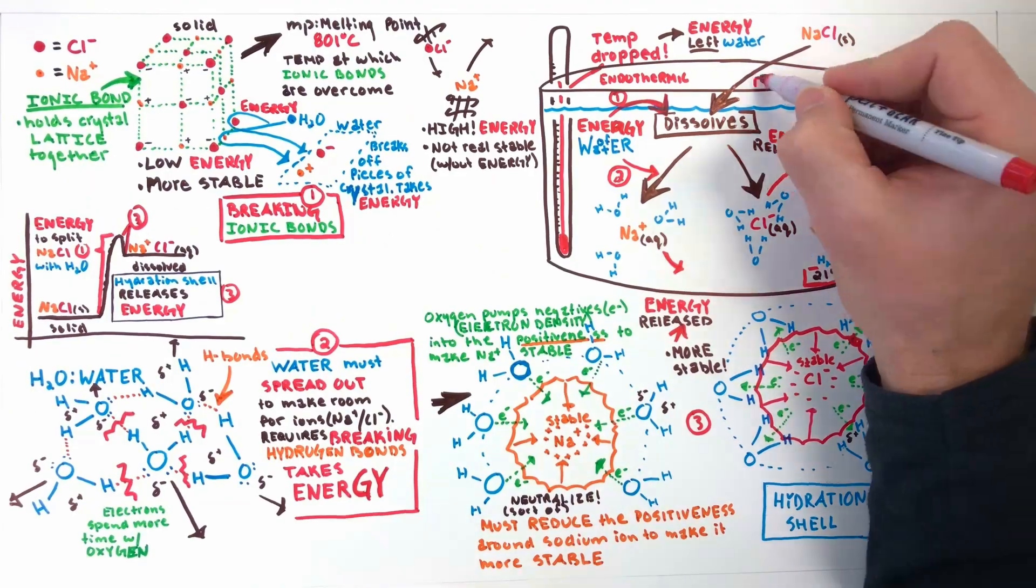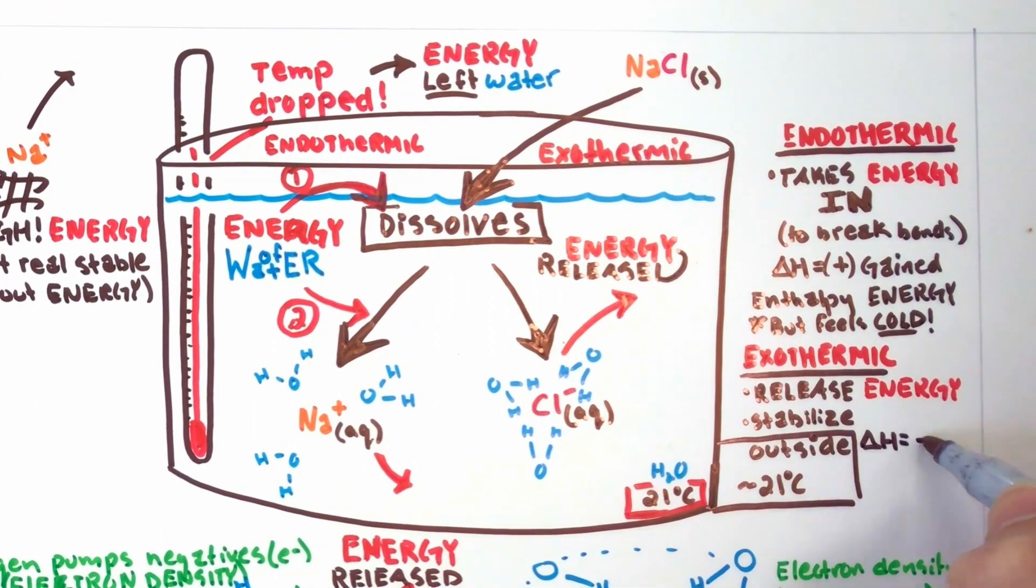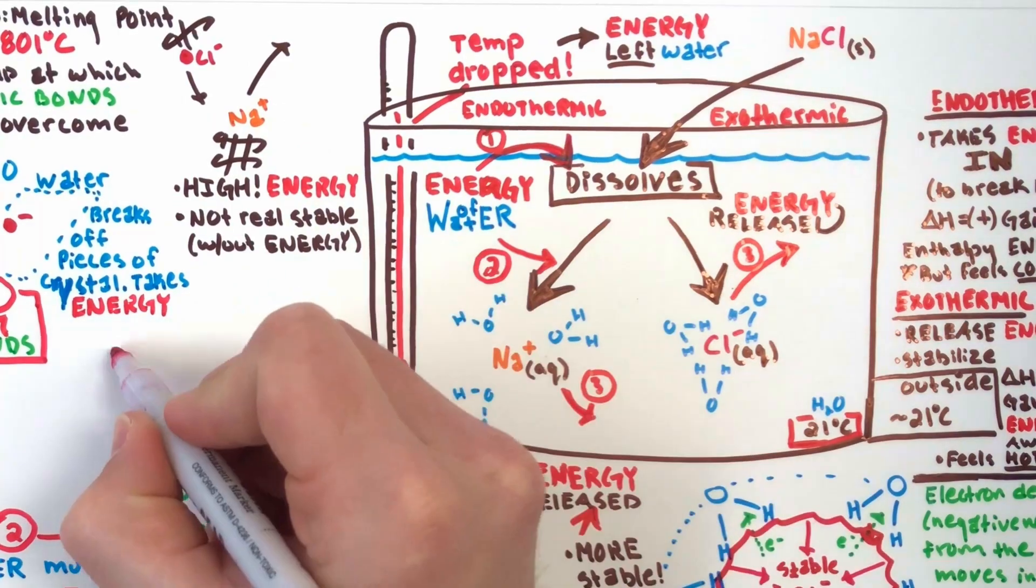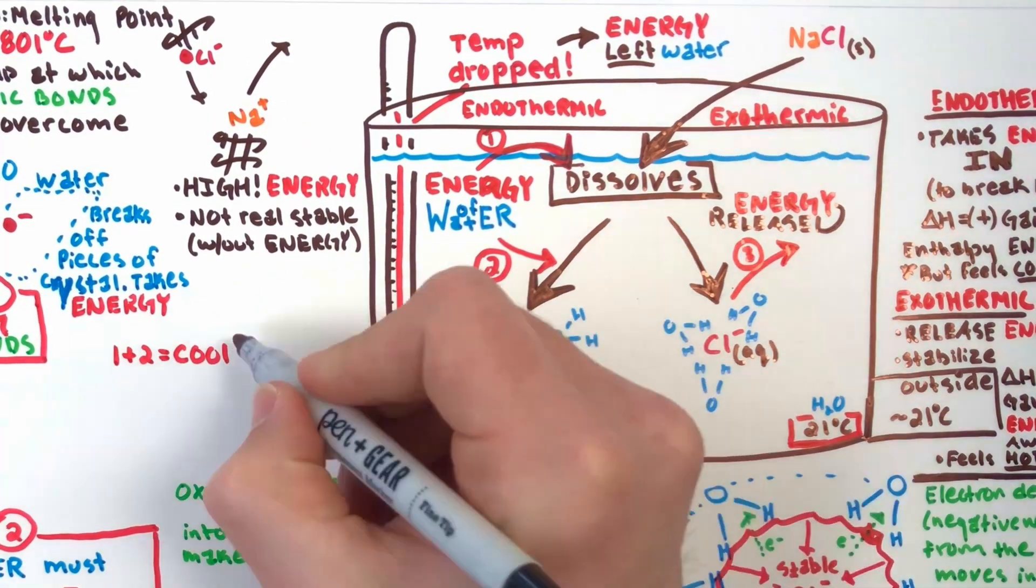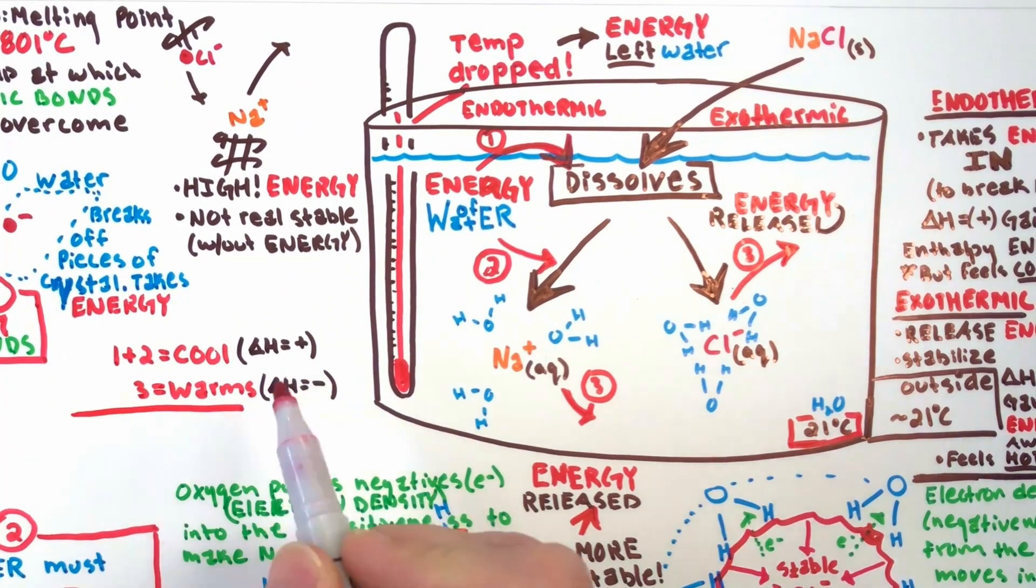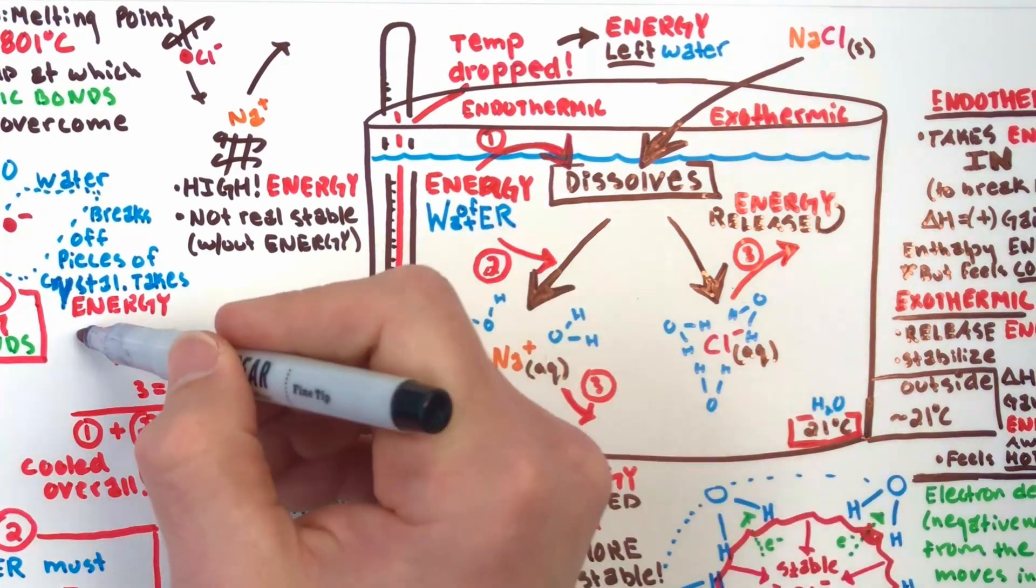We'll note it on our diagram and jot down exothermic enthalpy is seen as negative since energy is released. Part 1 and 2 took energy and were endothermic. Part 3 released energy when we made the hydration shells and was exothermic, but part 1 and 2's absorption of water's energy was greater than the energy released from the hydration shell, so overall the water cooled.